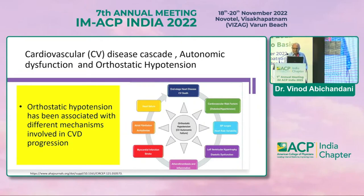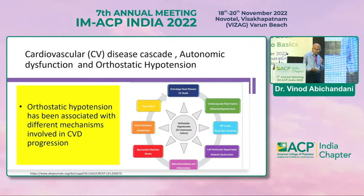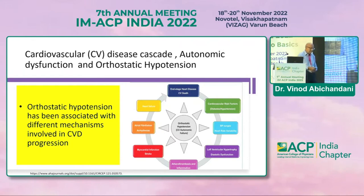OH has been associated with different mechanisms involved in cardiovascular disease, starting from cardiovascular risk factors including diabetes and hypertension, BP surges, heart rate variability, left ventricular hypertrophy, diastolic dysfunction, atherothrombosis and inflammation, MI, strokes, atrial fibrillation, arrhythmias, and heart failure through to end-stage heart disease.